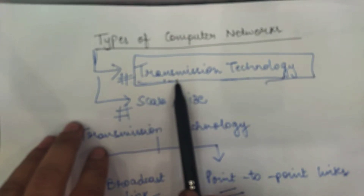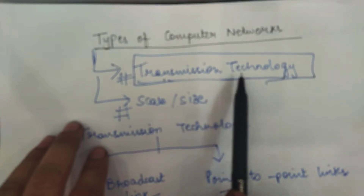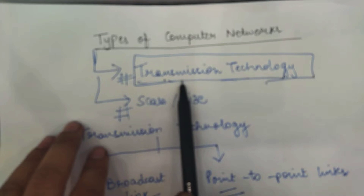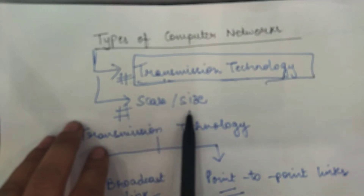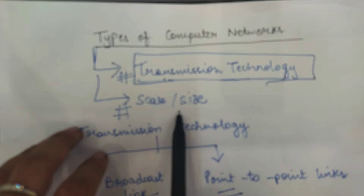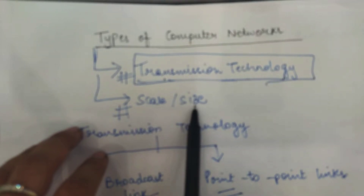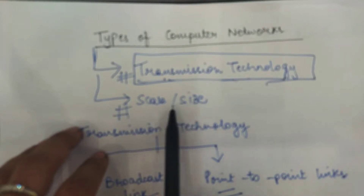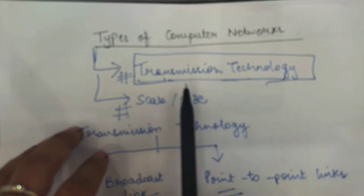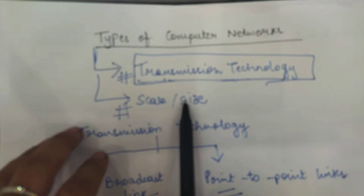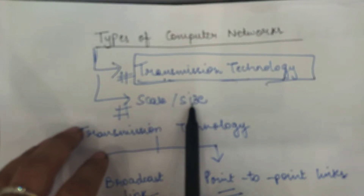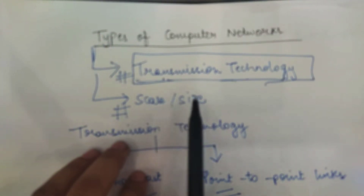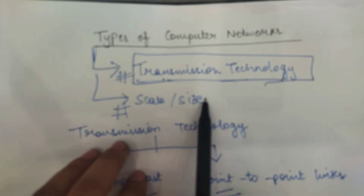Transmission technology means how you are transmitting the data from the source to the destination. Scale or size means the actual size of the network or the area that the network covers. So basically these are the two different ways in which you can classify a network: one classification is based on transmission technology and the other is based on the scale or size of the network.